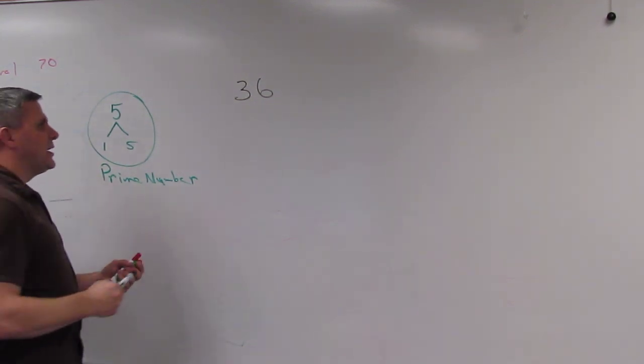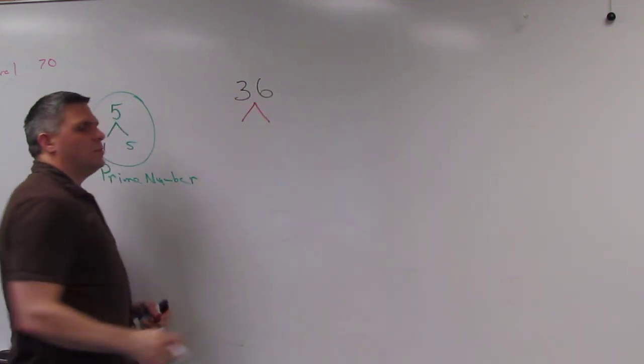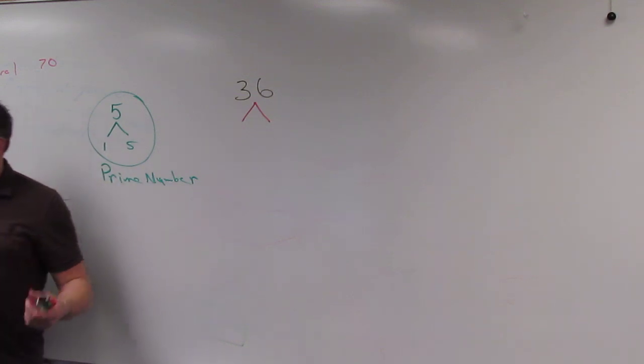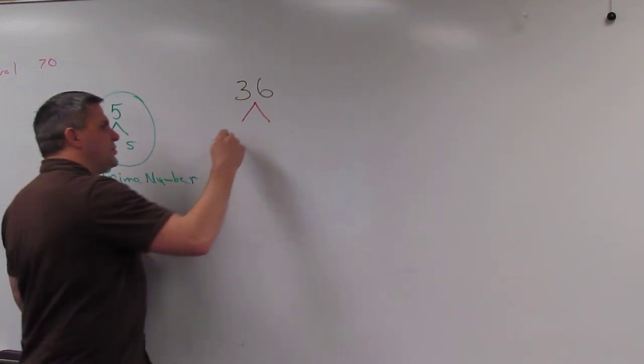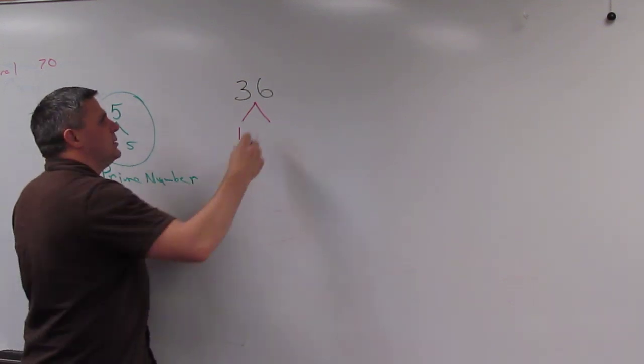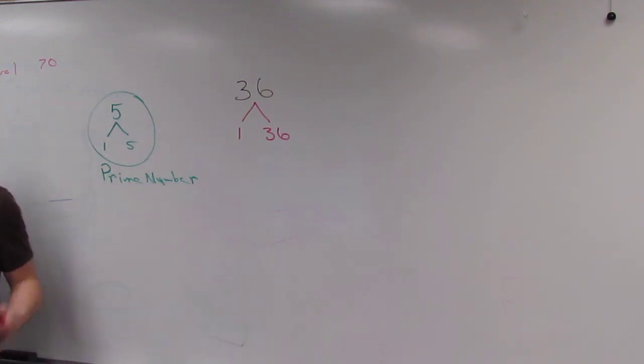So when we look at 36, we want to look at what numbers multiply to be 36. We always start with the low number. So we'll start with 1, and what number times 1 is 36? And so we should be able to come up with 36.